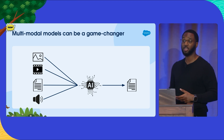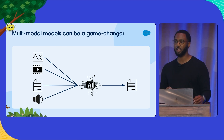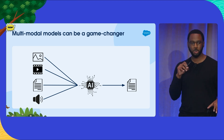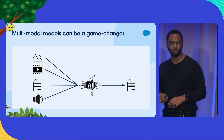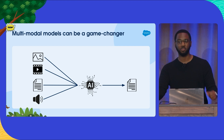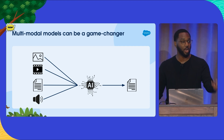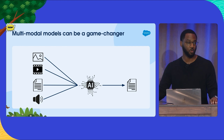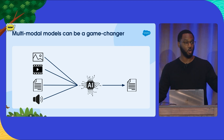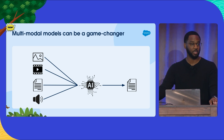Multimodal models can be an absolute game changer. Imagine a technical support scenario where a customer has a malfunctioning product. They chat into the chatbot and say their product is broken. The chatbot asks them to take a picture. It then takes the context of the issues the customer described, as well as the image of the actual product, and comes up with troubleshooting steps — or escalates, or even kicks off a return process — based on both what it heard from the customer and what it saw in the picture.